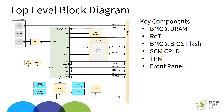Putting all of these interfaces together in a block diagram, looking at some of the key components: we see the BMC and associated memory, the root of trust, the BMC and BIOS flashes, the SEM-CPLD, the trusted platform module, and the front panel with USB, mini DisplayPort, and RJ45 interfaces. The spec goes into a lot more detail on all of these interfaces.